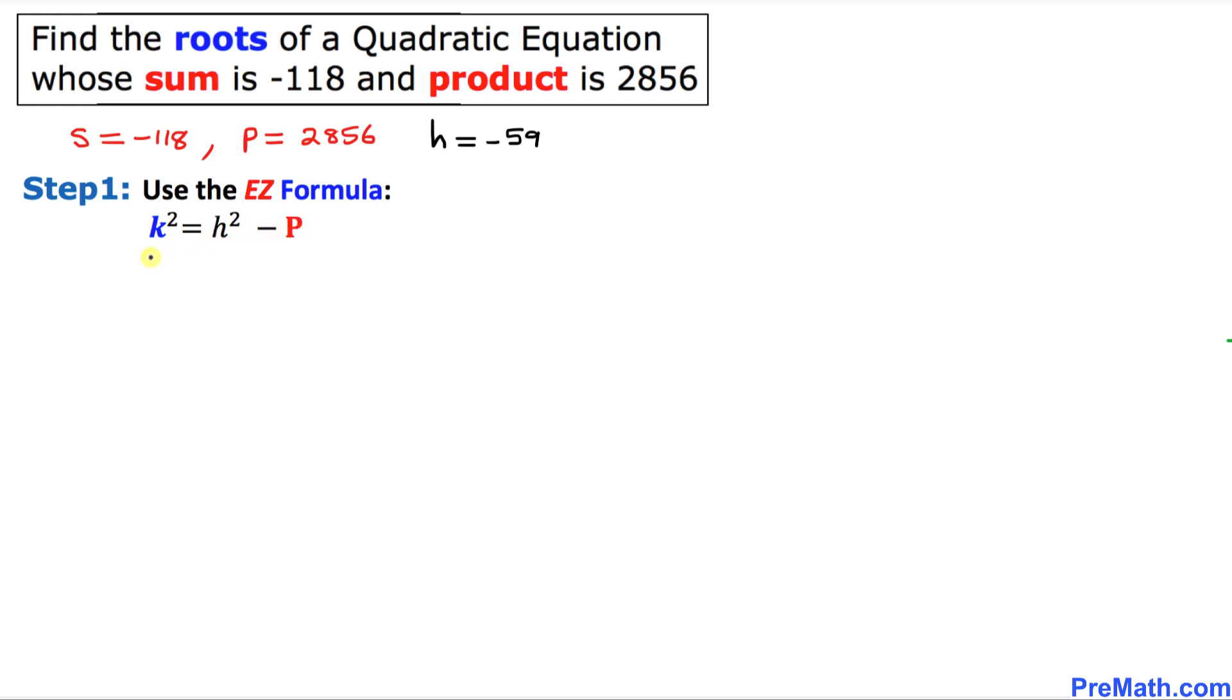So we are going to solve for k squared equal to, in our case h is negative 59, I'm going to replace h by negative 59 square minus P in our case is 2856. Let's simplify: negative 59 square is 3481 minus 2856. Let's subtract this one, that is going to give us 625.